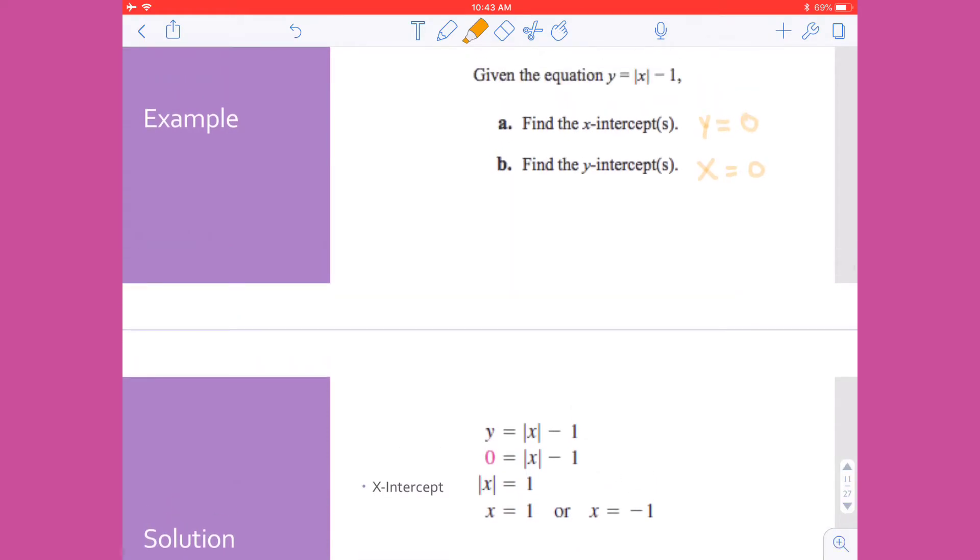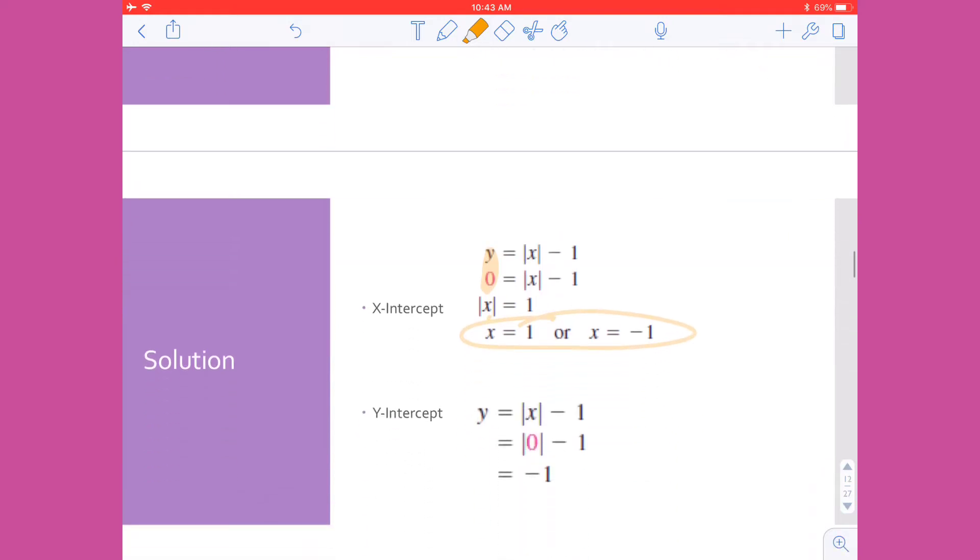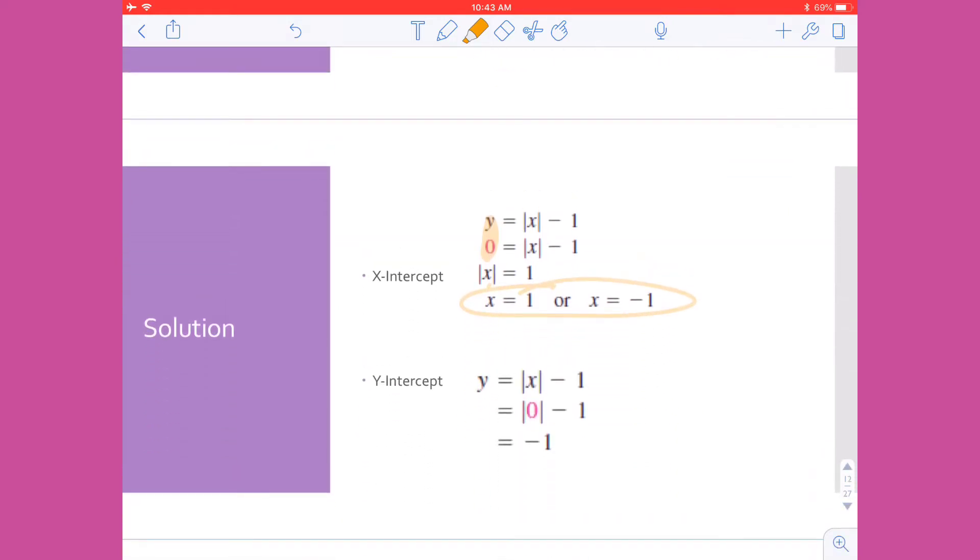Looking at my x-intercept solution, sure enough, I have said that y is equal to zero, so I've plugged that in. And then I'm going to solve, and I have the absolute value of x equals one. And that actually creates two solutions that x can equal one or that it can equal negative one. When I look at my y-intercept and I plug in zero for my x value, the absolute value of zero is zero, and zero minus one is the solution, negative one.